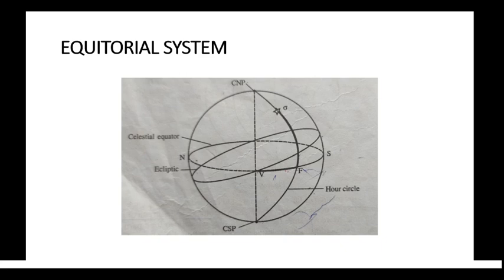Next is the equatorial system. There are two equatorial systems: the local equatorial system and the universal equatorial system. Here we are discussing the universal equatorial system, which is used for giving fixed coordinates to stars. Unlike the horizon system, the universal equatorial system can be used to get the fixed coordinates of a star.